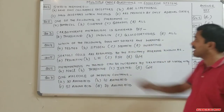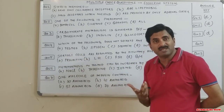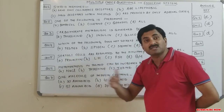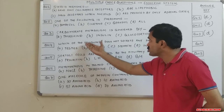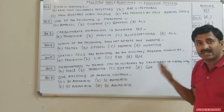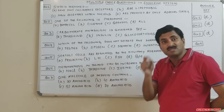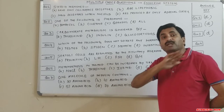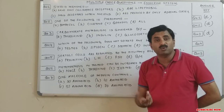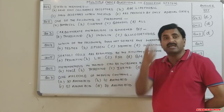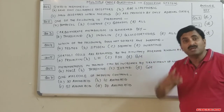Question four: which of the following does not secrete any hormone? Testes secrete testosterone (androgen), so they do secrete hormones. Spleen, which is present below the stomach, does not secrete any hormone at all. The stomach releases the gastrin hormone.